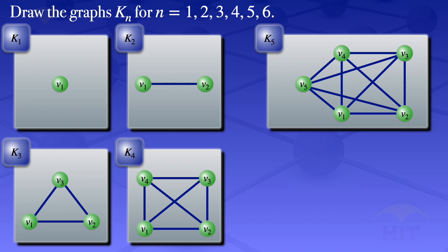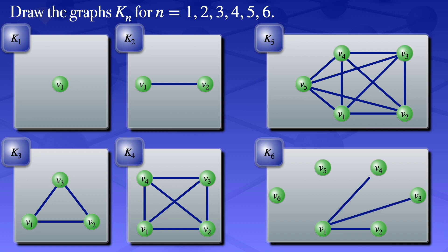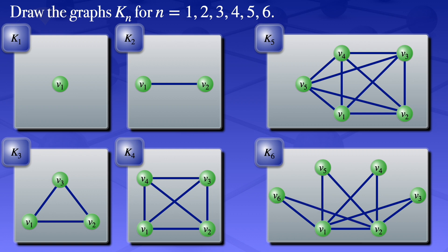I now move on to N equals 6, so K6 — a graph with 6 vertices: V1, V2, V3, V4, V5, V6. Drawing an edge between each pair of distinct vertices: V1-V2, V1-V3, V1-V4, V1-V5, V1-V6. We are done with V1. Moving on to V2: V2-V3, V2-V4, V2-V5, V2-V6.